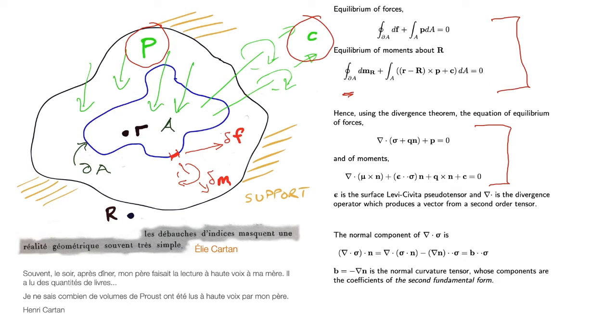We could talk about those equations for a long while, but perhaps the most important or the most interesting part is this normal component of the load balanced by the membrane stress. And what we find is this, which is what we perhaps expect. We have to multiply the membrane stress sigma by the normal curvature B. Or when I say multiply, we have this double dot, the double scalar product. B is the normal curvature, which in turn is minus the gradient of the surface normal, and the components of B are the coefficients of the second fundamental form.